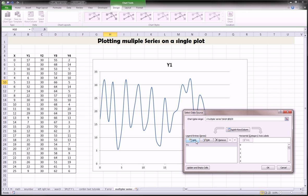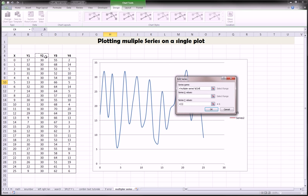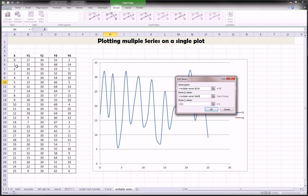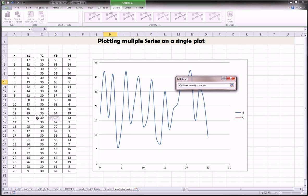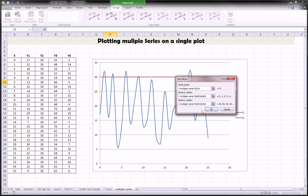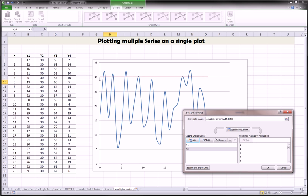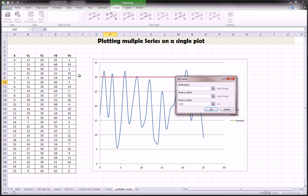But now we want to add Y2, Y3, and Y4. So we go back here and we say add. And we add Y2. X values again are the X values. Y values, delete those. Take the Y2 values. And we've added Y2 is the red line. It's a straight line because all its values are the same, 30.